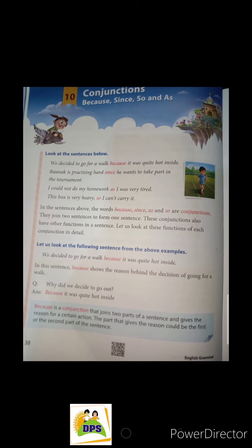In the sentences above, the words because, since, as, and so are conjunctions. These words, shown in red, join two sentences to form one sentence.